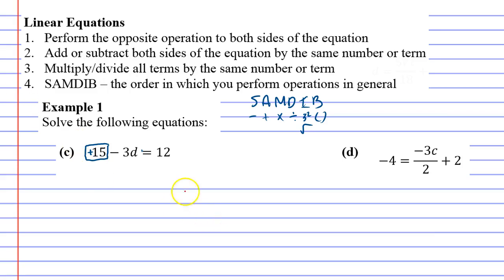So to get rid of the 15, you actually need to subtract on both sides, and that is how it will cancel.